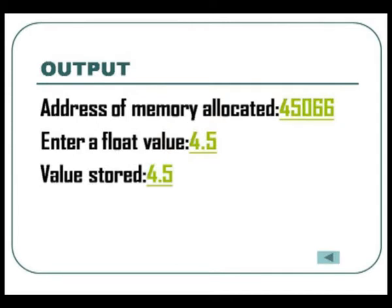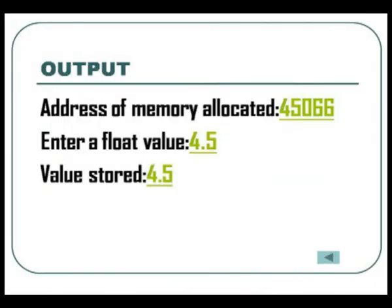So this is how the value is printed. First the address is printed, then the float value that we have entered, then the value is stored correctly at this particular address. So this is how we use malloc functions in the dynamic memory allocation in the C programming language.